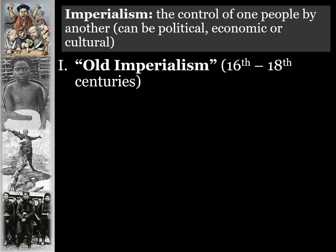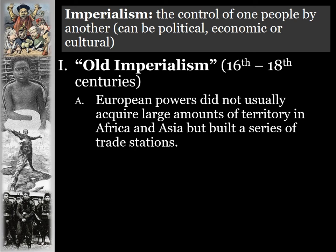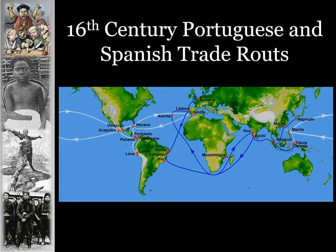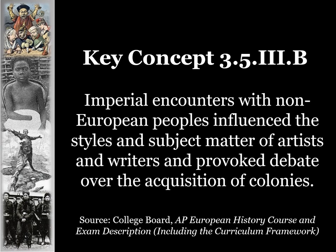The old wave of imperialism was what happened between the 16th to 18th centuries. European powers did not usually acquire large amounts of territory in Africa and Asia during this period, but instead built a series of trade stations along the coastline. The New World was the exception in this time period, as seen in 16th century Portuguese and Spanish trade routes.